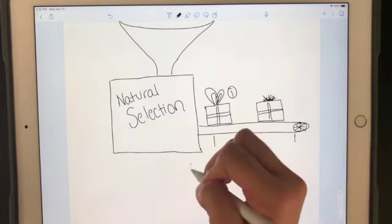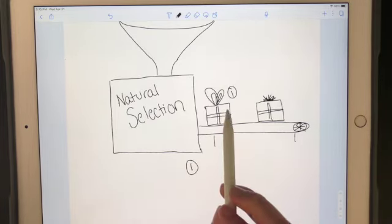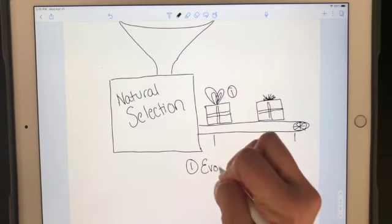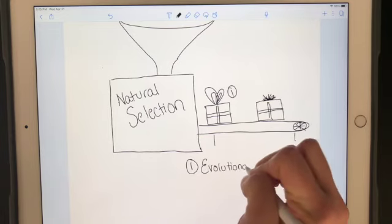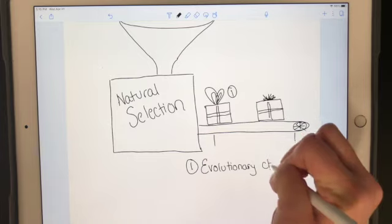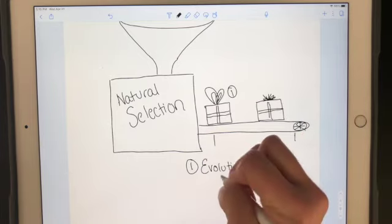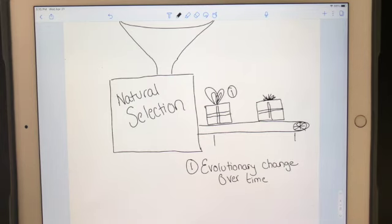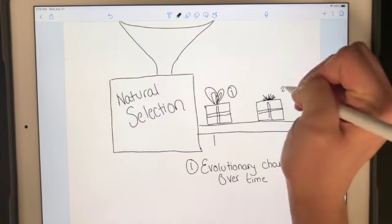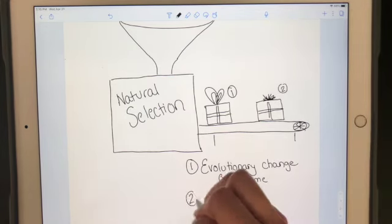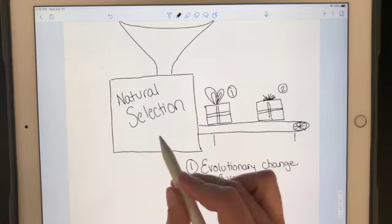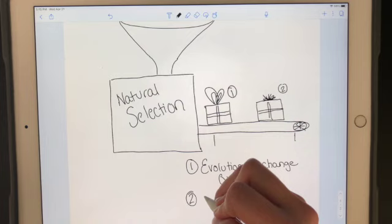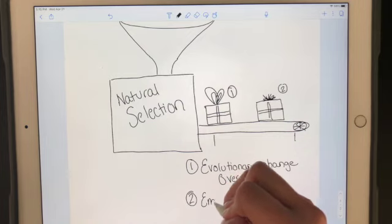The first possible product we have could be evolutionary change over time. The second is when natural selection acts on genetic variation, we can see the emergence of new species.